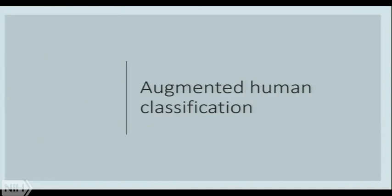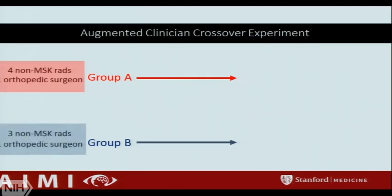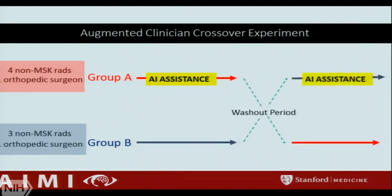We really wanted to figure out how we would use this model in practice. There's been a lot of talk about augmented radiology and cyborg radiologists — how would we actually use the output of our model to help a radiologist make a decision? As an MPH, I can design a drug trial, so that's exactly what we did. We designed a crossover trial with two groups: group one had four non-MSK radiologists and one orthopedic surgeon; group two had three non-MSK radiologists and one orthopedic surgeon. We included orthopedic surgeons because there may be an opportunity to use AI to help clinicians read images in their clinic. We gave group A AI assistance — simply the model's label and its probability confidence — then had a washout period and switched the groups.